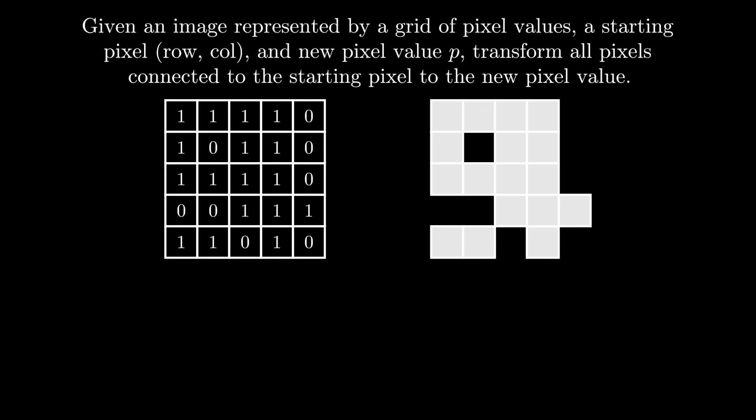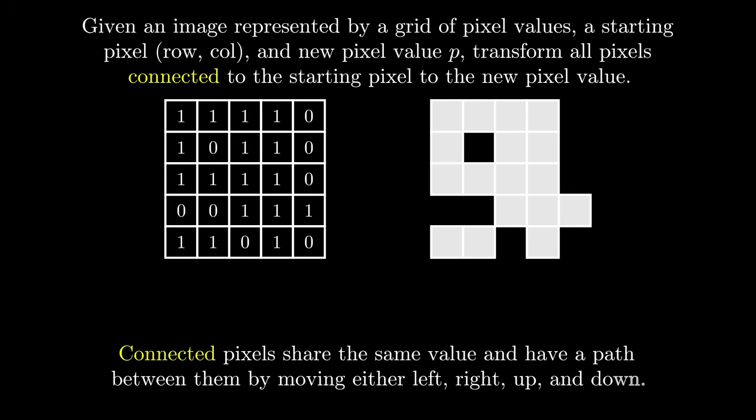With this image representation, it's a lot easier to understand the notion of connectivity as it relates to an image. Connected pixels share the same pixel value and have a path between them by moving either left, right, up, or down.